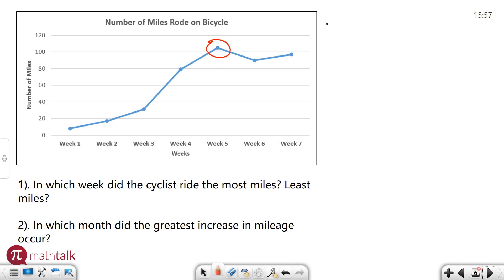So number one I'm going to write five and I'm going to separate it with a comma just because that'll help us separate the two answers. The least miles, where the least is the dot that's the lowest down. In this case it looks like it's all the way down here on week one. So week one is going to be our answer for the least amount of miles. Pretty simple question.